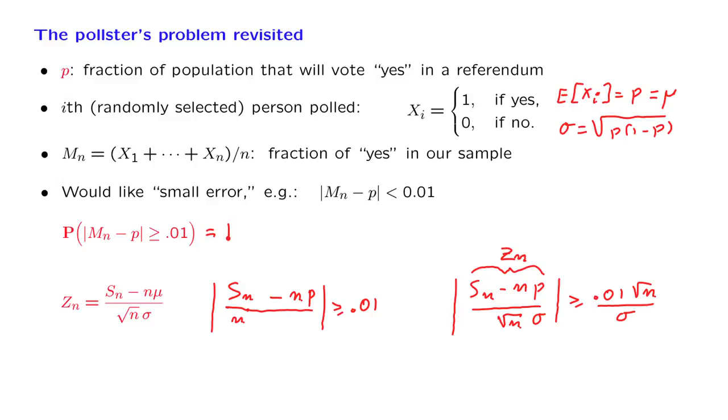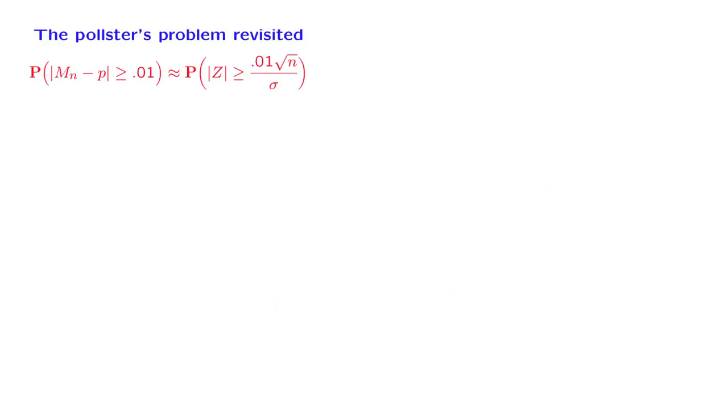In particular, what we have is that this probability is the same as the probability that the absolute value of Zn is larger than or equal to 0.01 square root of n divided by sigma. And then we can use the central limit theorem approximation to approximate this probability by the corresponding probability where we now use a standard normal random variable instead of the Zn random variable. Here Z stands for a standard normal random variable with mean 0 and variance equal to 1.